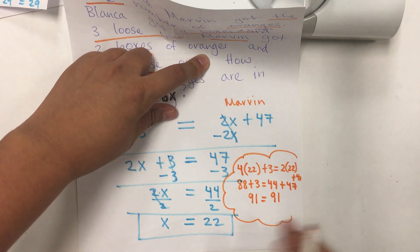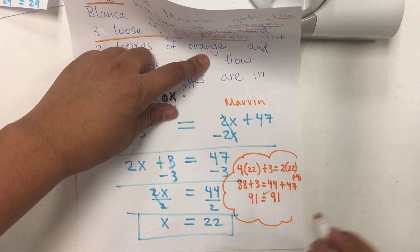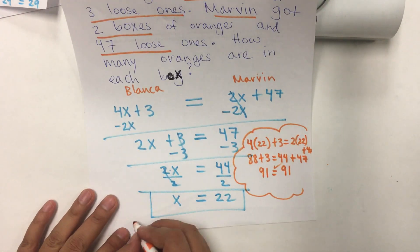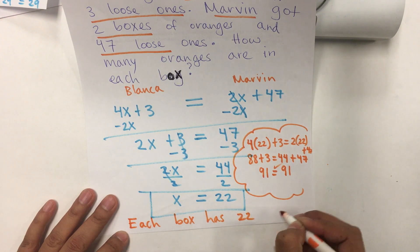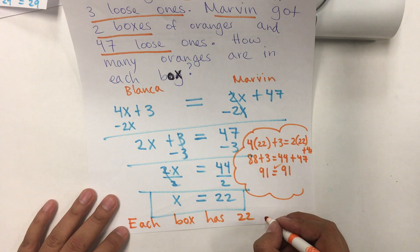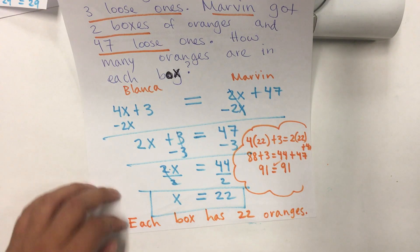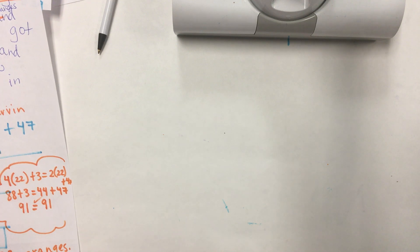So, that's the right answer. And, the sentence, don't forget, each box has 22 oranges. So, that will help you do 2.5 and have fun.